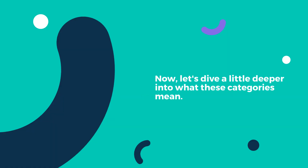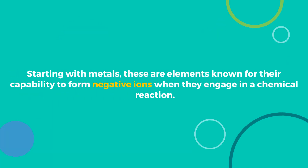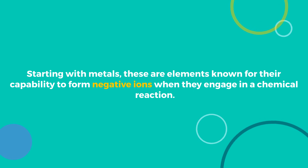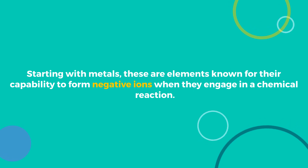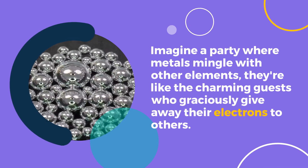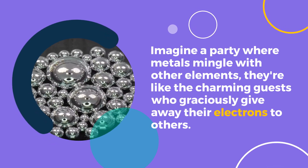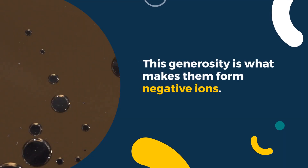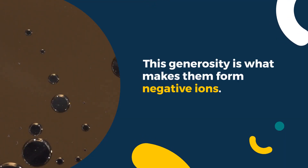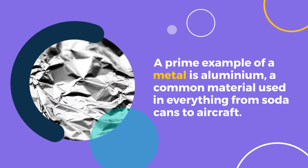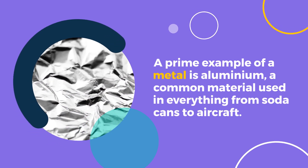Let's dive a little deeper into what these categories mean. Starting with metals, these are elements known for their capability to form negative ions when they engage in a chemical reaction. Imagine a party where metals mingle with other elements — they're like the charming guests who graciously give away their electrons to others. This generosity is what makes them form negative ions. A prime example of a metal is aluminum, a common material used in everything from soda cans to aircraft.